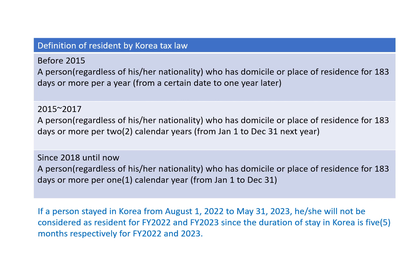From 2015 to 2017, the law changed: a person, regardless of nationality, who had a domicile or place of residence for 183 days or more per two calendar years — meaning, for example, from January 1 to December 31 of the next year. This made it very easy for a person to become a resident, since only 183 days over two years was required. Since 2018, the currently applicable law requires a domicile or place of residence for 183 days or more per one calendar year, meaning from January 1 to December 31 of the same year.